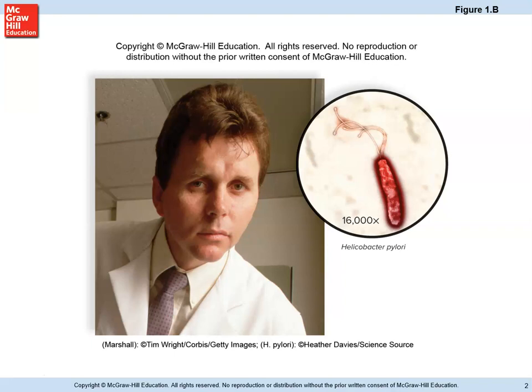Postulate number one is that you must find that thing present in every case of the disease. For ulcers, everyone who had an ulcer could be tested with a stomach swab to see if the bacteria was there — pretty simple, and Marshall checked off postulate one very quickly. Postulate number two says you have to take what you found and be able to grow it in the lab, which is also fairly easy to do with most bacteria. The first two postulates typically aren't difficult to satisfy.